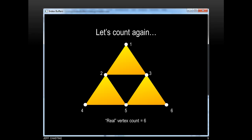However, if we look at it slightly differently, you can see that there's really only six vertices. And this makes us question whether or not there might be a more efficient way to do things.